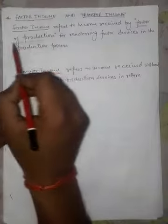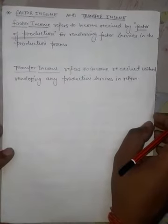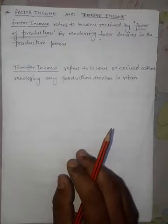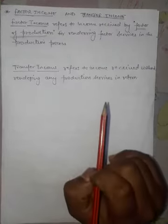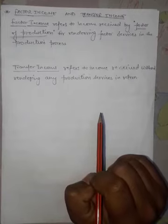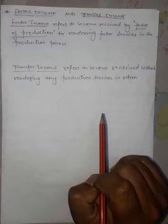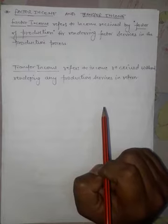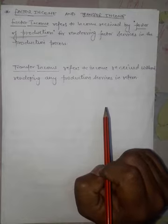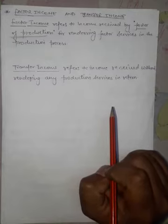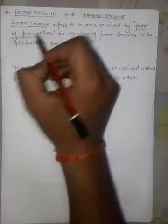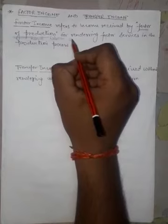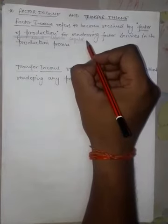I told you about factor of production in the first video. Factor of production is the primary inputs which are needed to produce goods and services. They are broadly categorized in different heads like land, labor, capital, and entrepreneur.